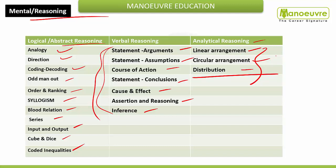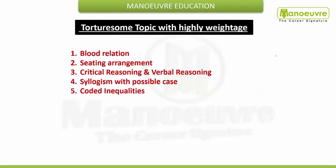Now we will see which are the most important topics from the reasoning section with highly weightage — topics that can trouble you in the exam but will give you more marks. Blood relation — you should have a very good command on it. Sitting arrangement — puzzle type questions — that should also be very good. You can expect at least 15 mark questions from this section.